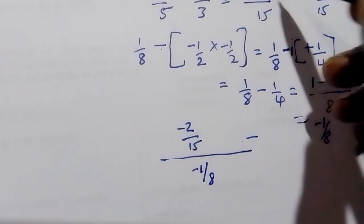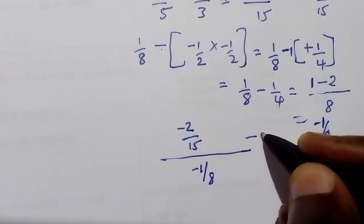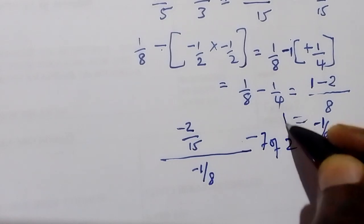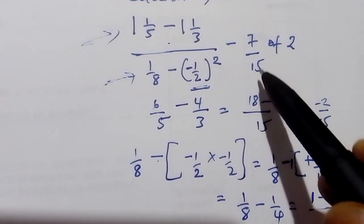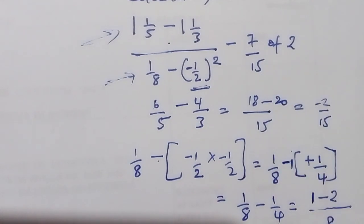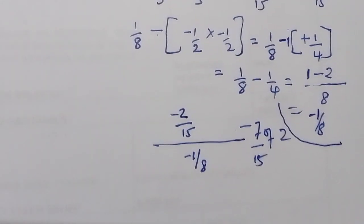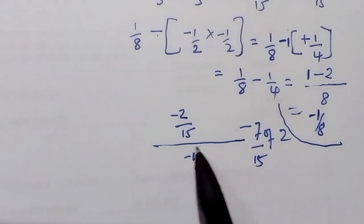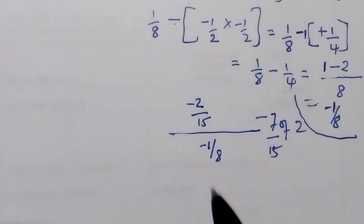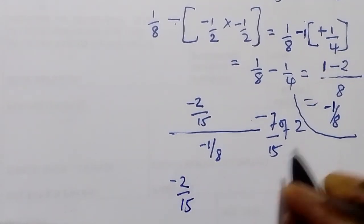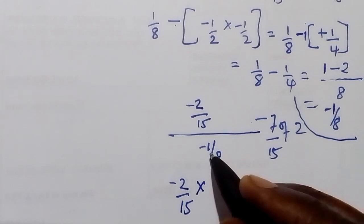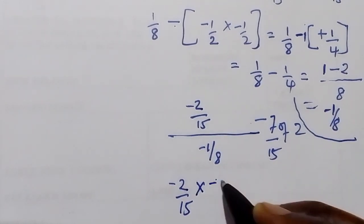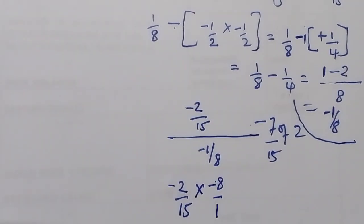We copy the other side: 7 over 15 over 2. So we can rewrite this as negative 2 over 15 times the reciprocal of negative 1 over 8, which is negative 8 over 1.